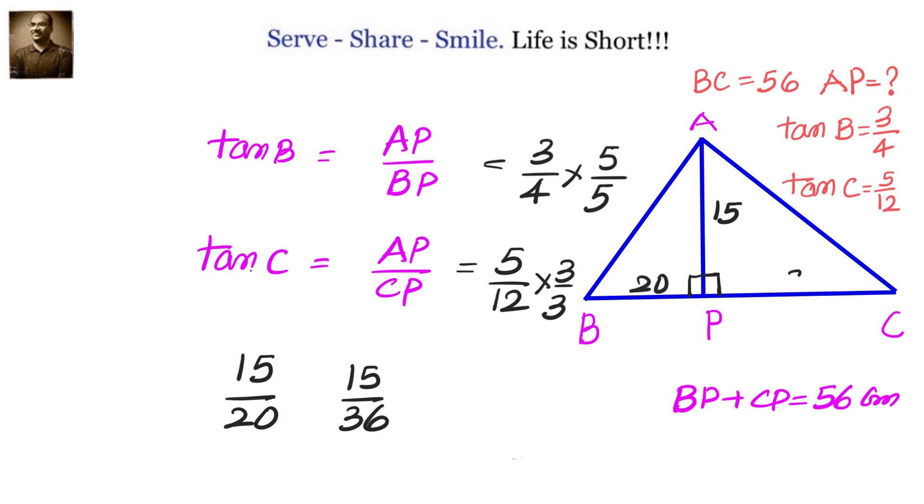We know that BP divided by CP equals 20 by 36, and we also know that BP plus CP is 56. So we got BP as 20, CP as 36. Obviously, then AP will become 15.